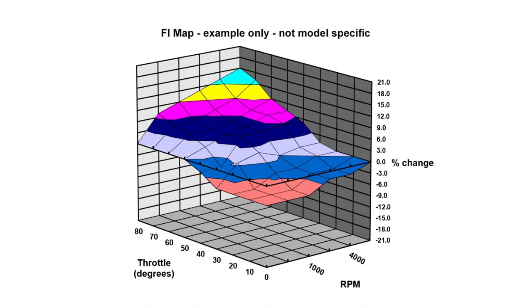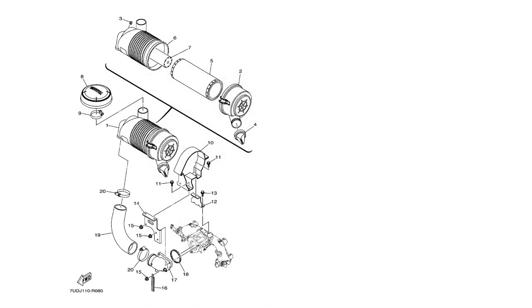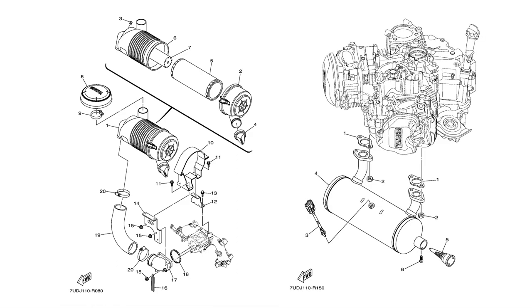It's critical to remember that the FI system mapping is completed with the air filter and exhaust systems in new condition. There are no FI sensors that monitor the condition of the air filter or exhaust.